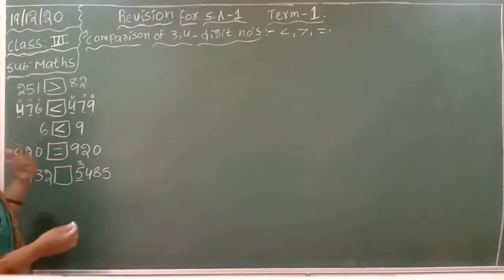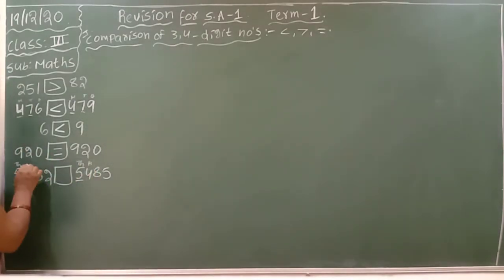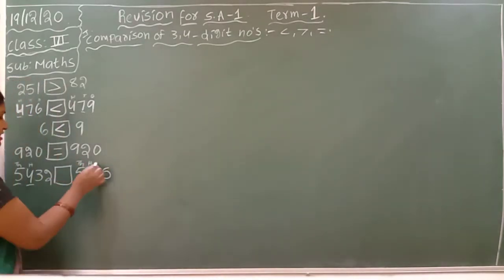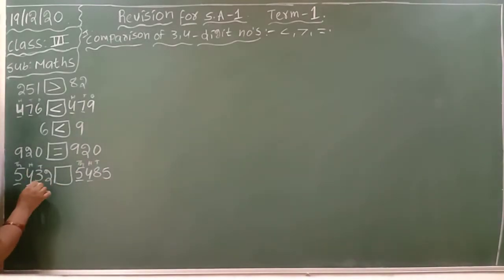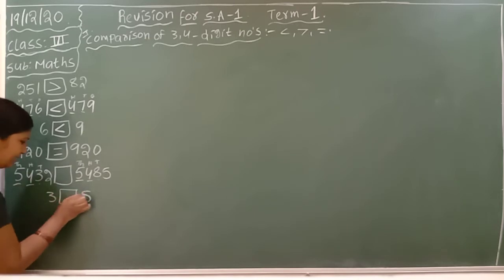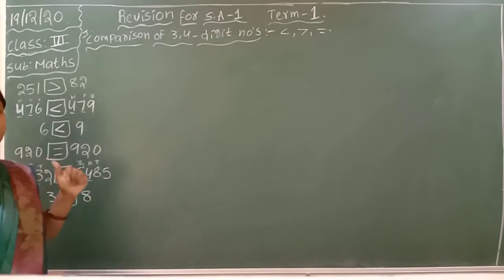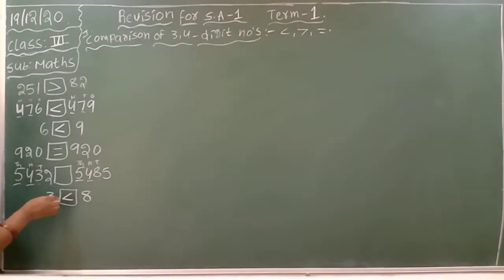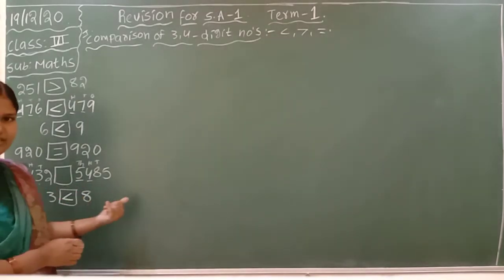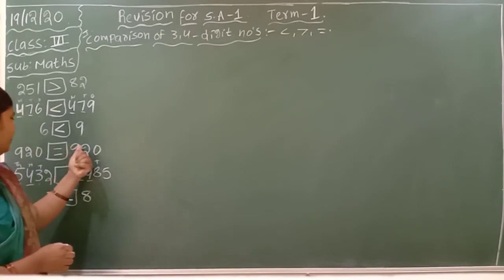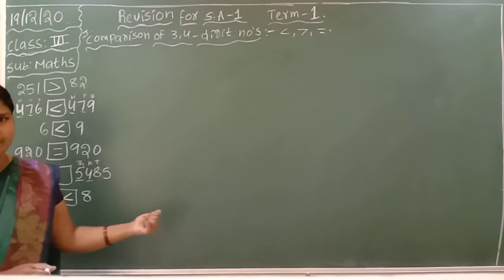Means go for the next place, that is 100s place. Here also same. Again go for the before place, that is 10s place. Here 3 is there, here 8 is there. Compare 3 and 8 — which is the big number? 8 is the big number, so big number side opens. If the 10s place is different, no need to check the 1s place. If 10s place are the same, then you can check the 1s place.